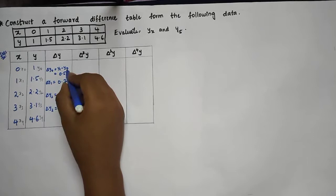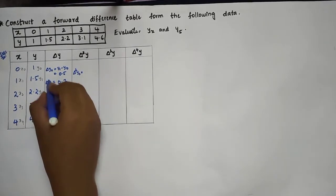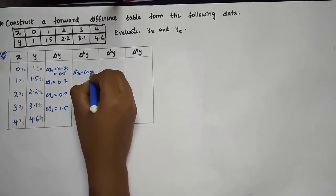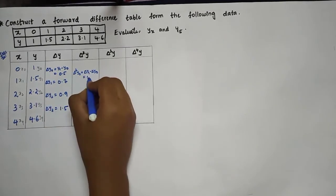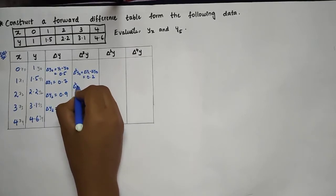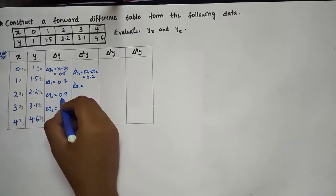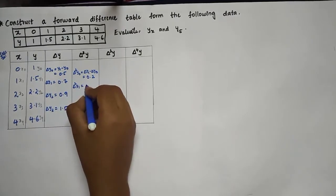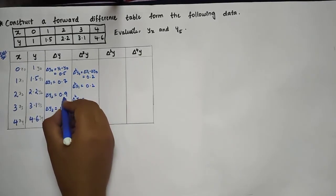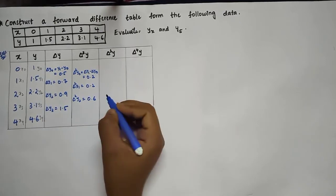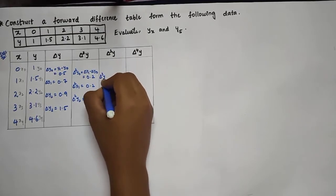Now move to the second difference, Δ²y. Δ²y₀ = Δy₁ − Δy₀ = 0.7 − 0.5 = 0.2. Δ²y₁ = Δy₂ − Δy₁ = 0.9 − 0.7 = 0.2. Δ²y₂ = Δy₃ − Δy₂ = 1.5 − 0.9 = 0.6.